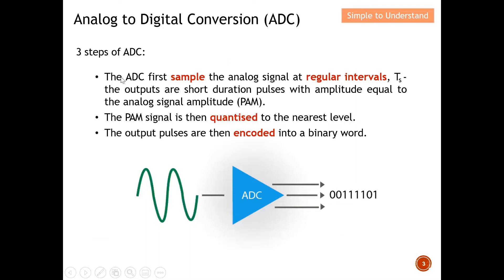The three steps of ADC: the first step is sampling — how we sample the analog signal at a regular interval, for example TS, which is the sampling time. The output consists of short duration pulses with amplitude equal to the analog signal amplitude. The first step of ADC is sampling: how many samples we need to successfully convert the analog signal to a digital signal.